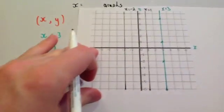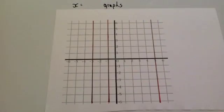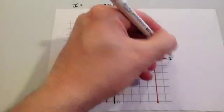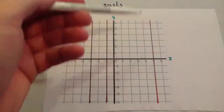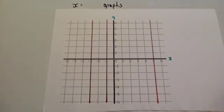So that's how you draw an x equals graph. Here we've got three graphs that we need to find the equation for. We've got this line, this line, and this line. Because they're vertical lines, they're going to be x equals graphs.